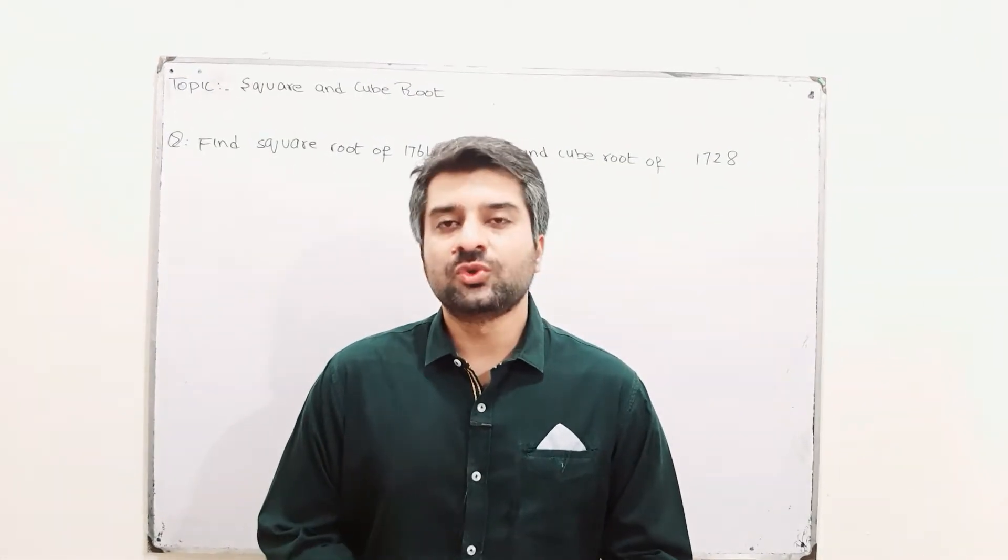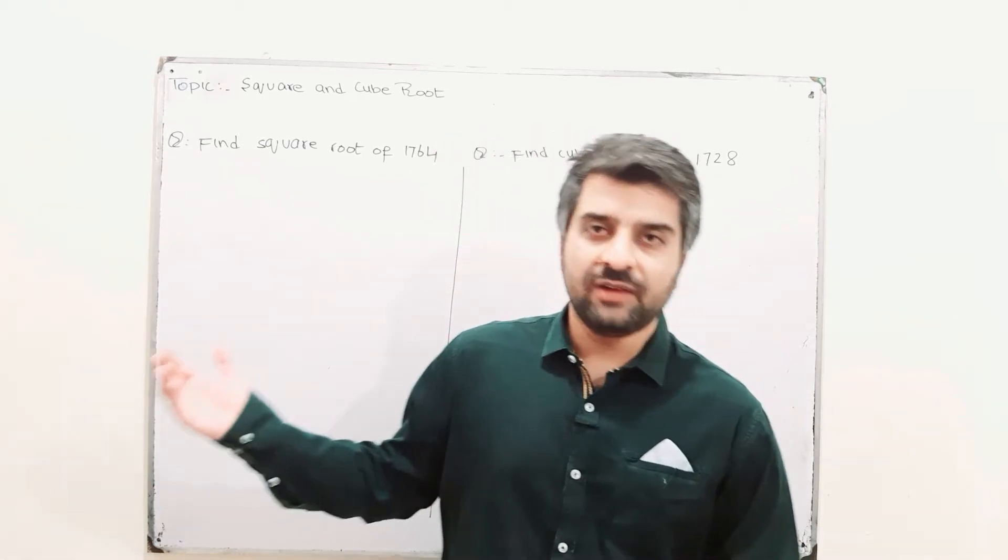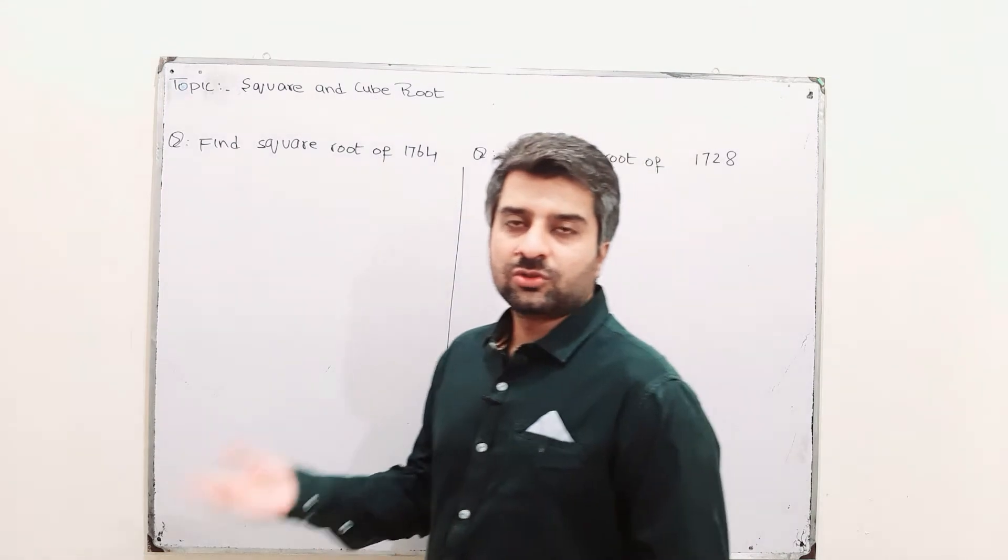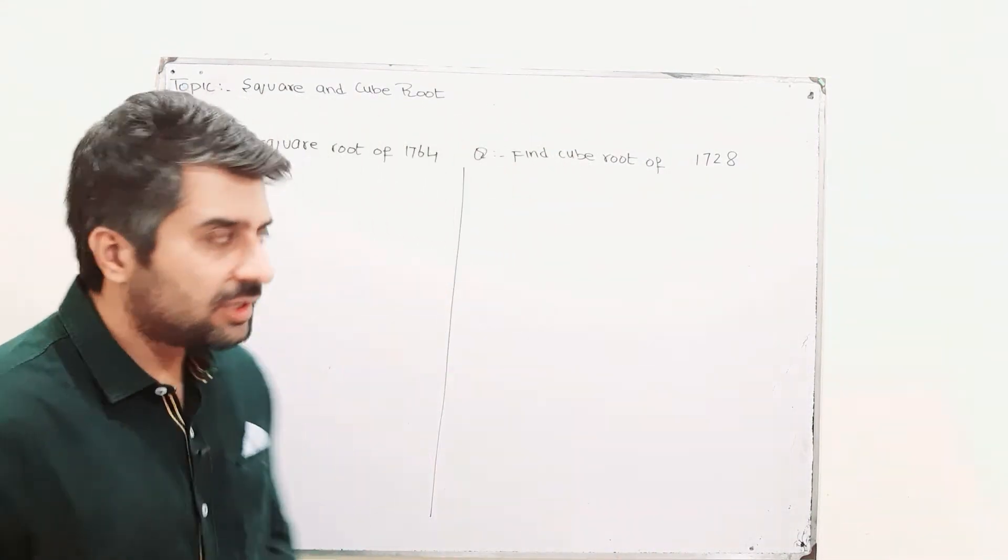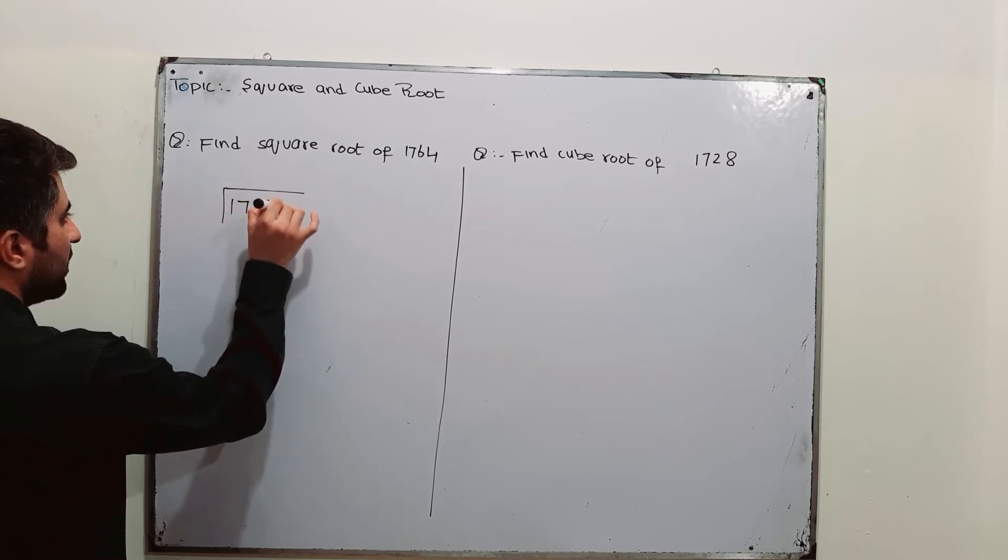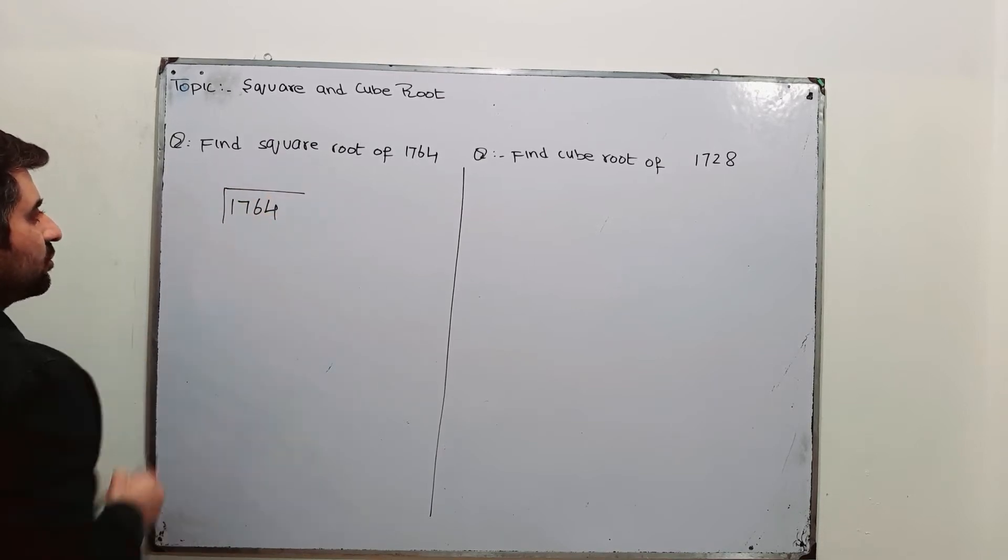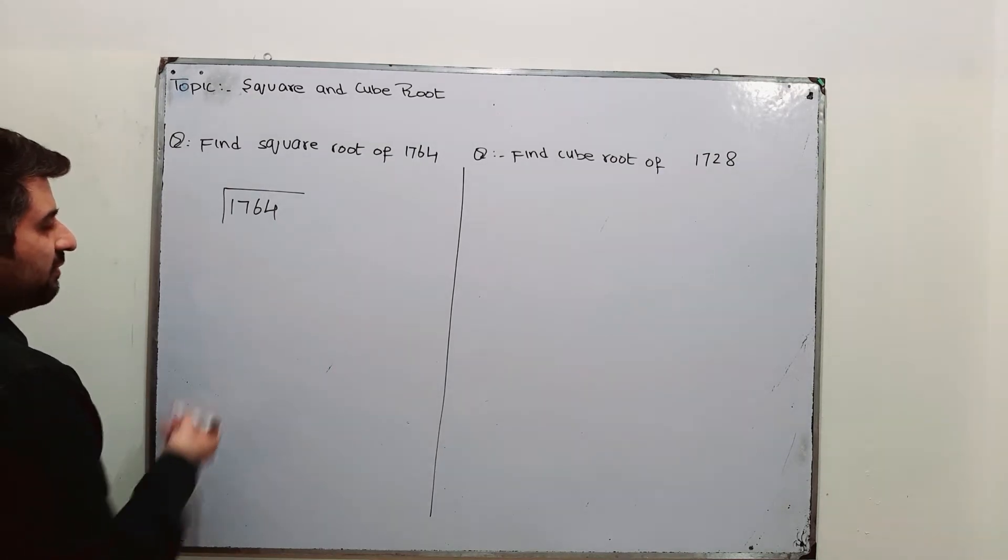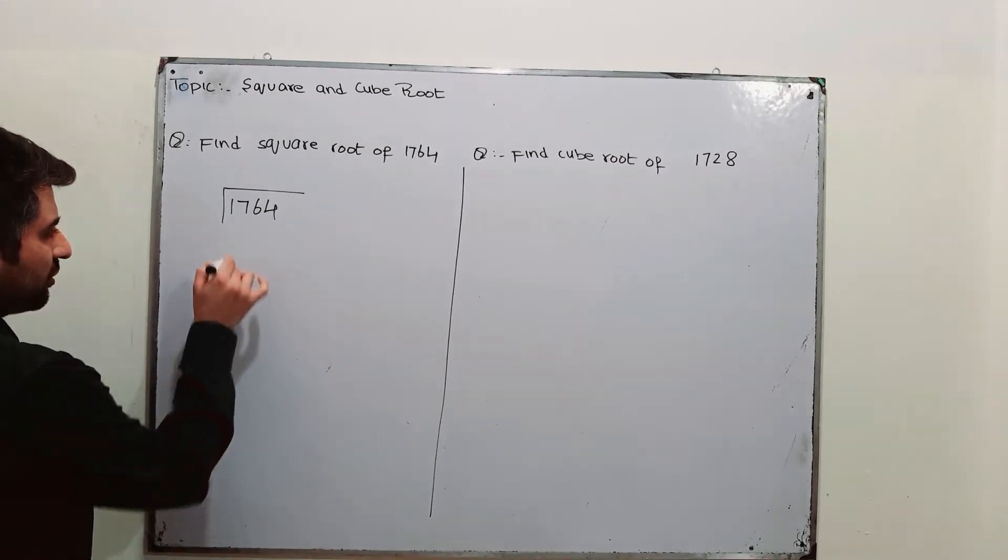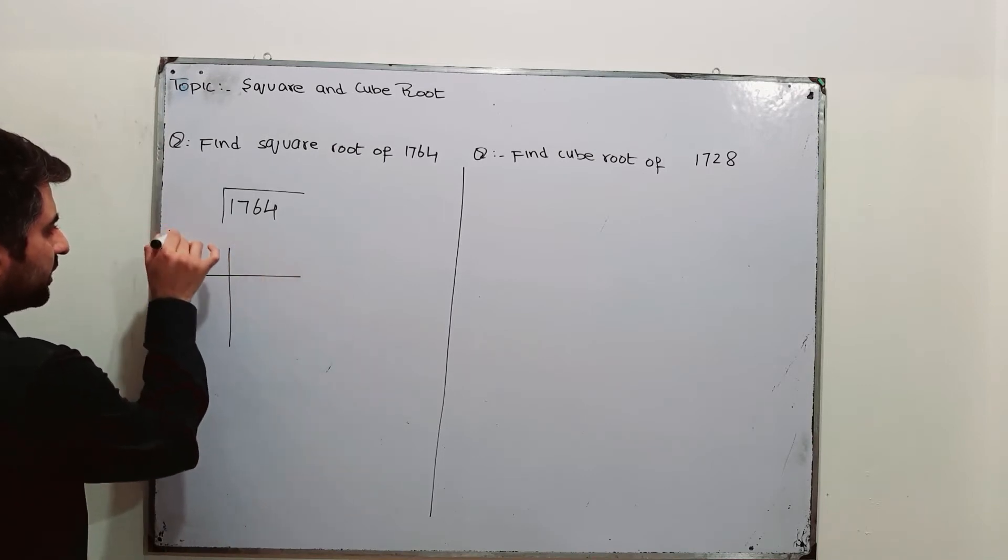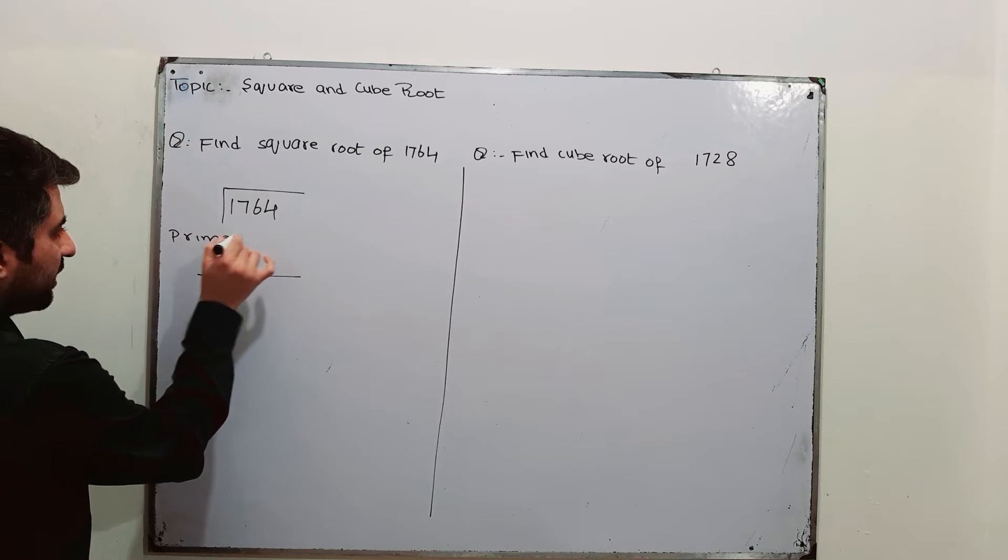So, how to find square root of a number? We have to find square root of 1764. First of all, how you are going to write it? You just write it like this: square root 1764. This is the symbol for square root. Now, how to find the square root of 1764? Well, first of all, do prime factorization.